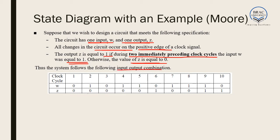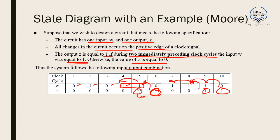Looking at the input-output combinations: with inputs 0, 1, 0, 1, 1 — even though two clock cycles have W=1, the output is not immediately 1. The output becomes 1 only where the two clock cycles before it had W=1. The phrase 'two immediately preceding clock cycles' means two clock cycles in the past, so output depends on past state, not the present value. Here the output can be 1 even when the present input is 0, confirming this is a Moore type machine.